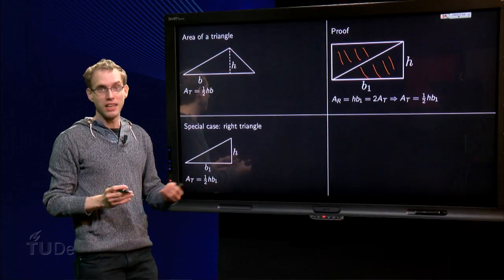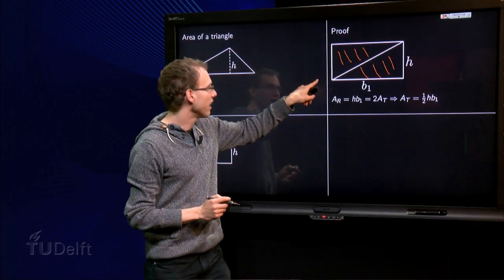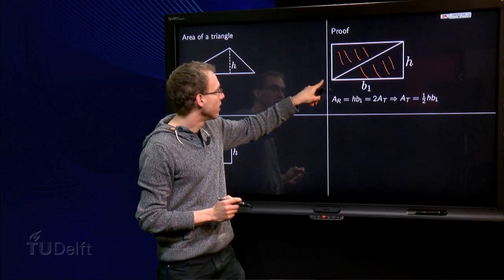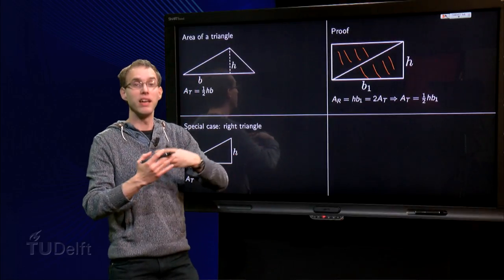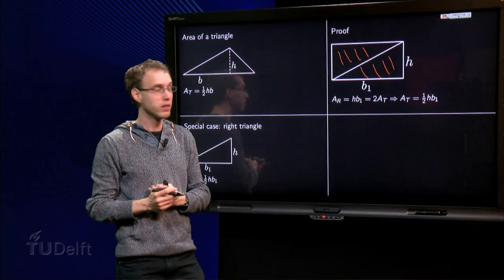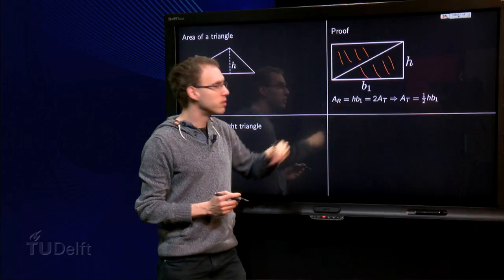And now we can use an axiom which tells us that the area of a rectangle equals the length times the width. So the area of the rectangle is, by definition, h times b1.